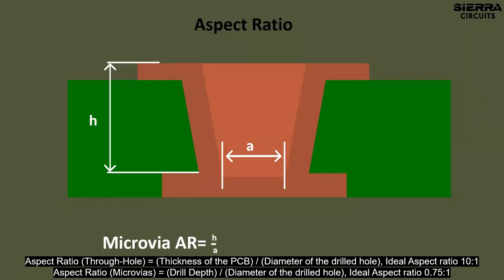Aspect ratio for through holes is equal to the thickness of the PCB divided by the diameter of the drilled hole. The ideal aspect ratio here is 10:1. Aspect ratio for micro vias is equal to drill depth divided by the diameter of the drilled hole. The ideal aspect ratio here is 0.75:1.